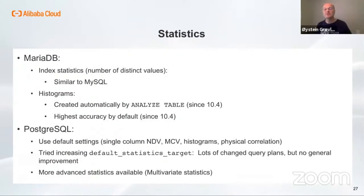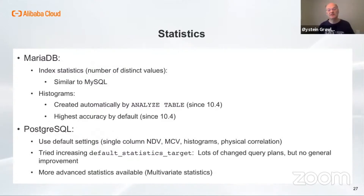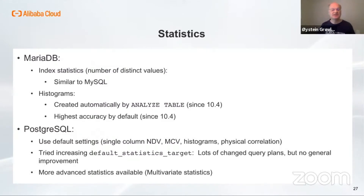A few words on statistics for MariaDB and Postgres. For MariaDB, index statistics are similar to MySQL, while histograms are on by default and automatically generated when you run ANALYZE TABLE. For Postgres, I used the default settings. I tried experimenting with increasing the default statistics target and got many new query plans, but they did not improve things on average. There is also more advanced statistics in Postgres that I did not enable.